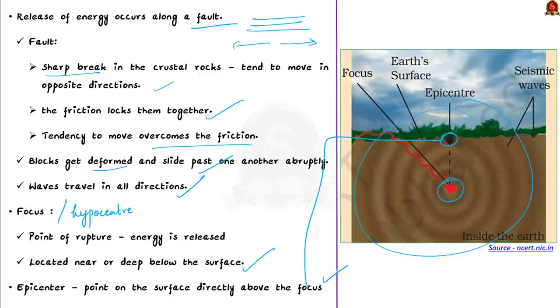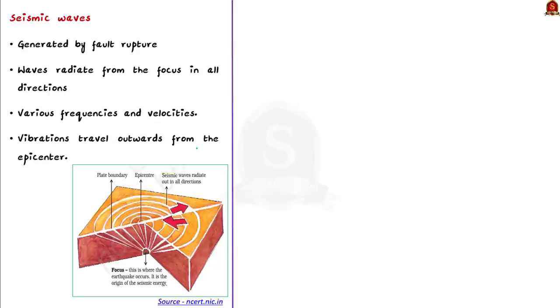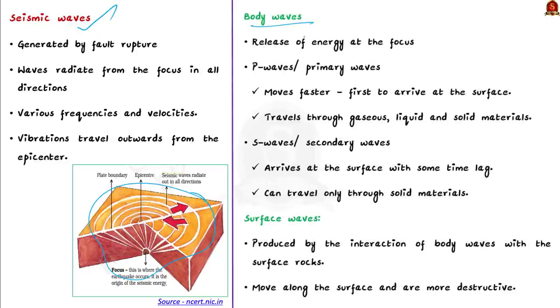Vibrations caused by earthquakes are called seismic waves — meaning shock waves or earthquake waves. These waves radiate from the focus in all directions at various frequencies and velocities. Seismic waves are basically of two types: body waves and surface waves. Body waves are generated due to the release of energy at the focus and move through the body of the earth. They are further subdivided into primary waves (P waves) and secondary waves (S waves).